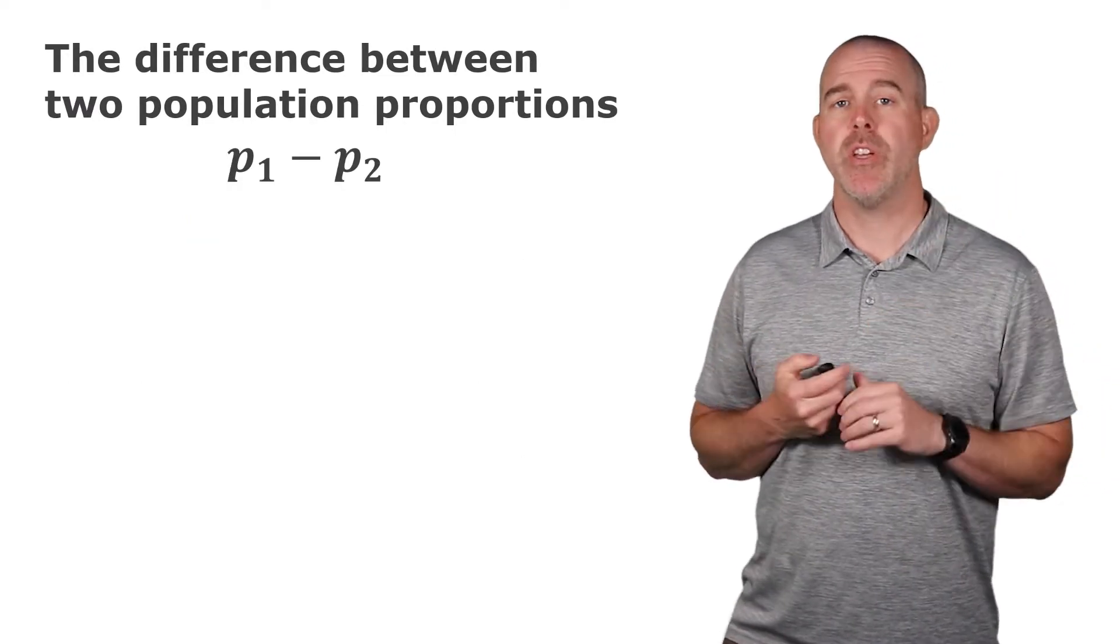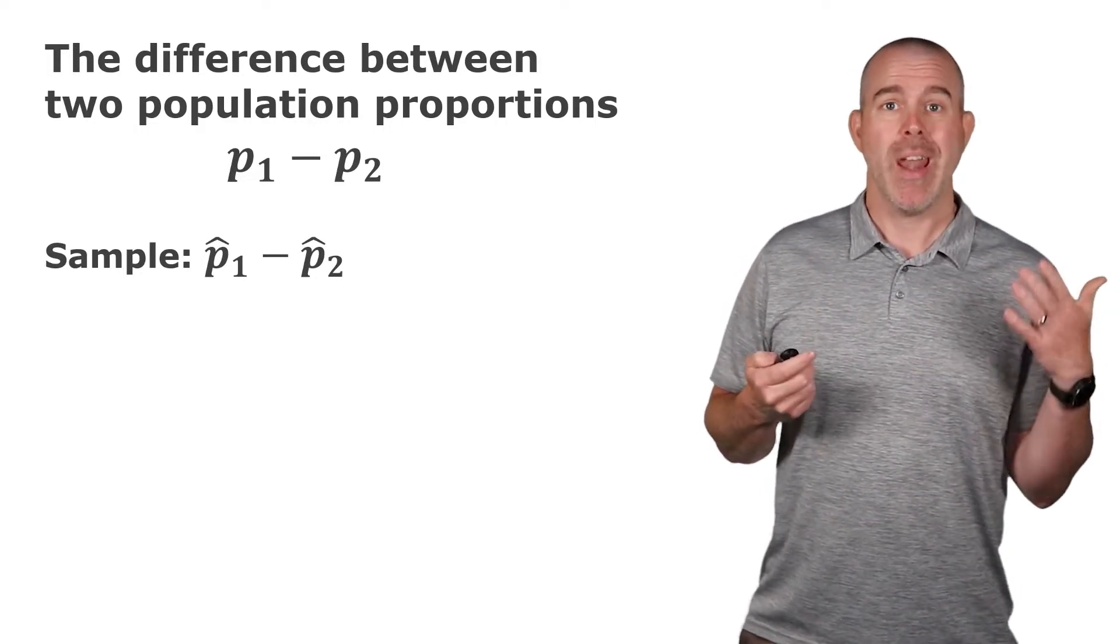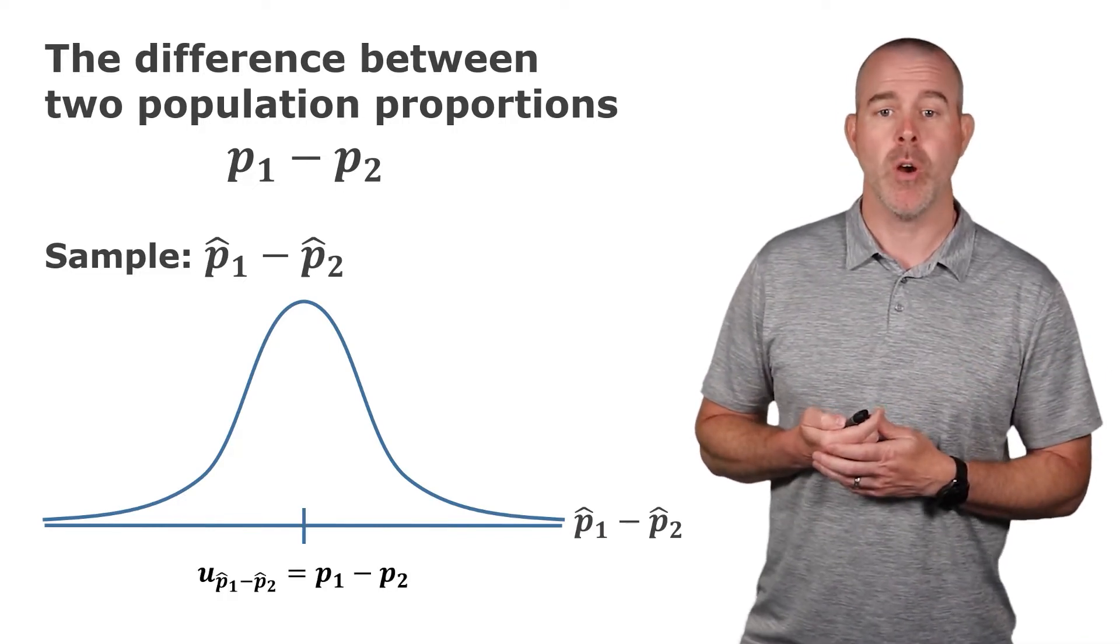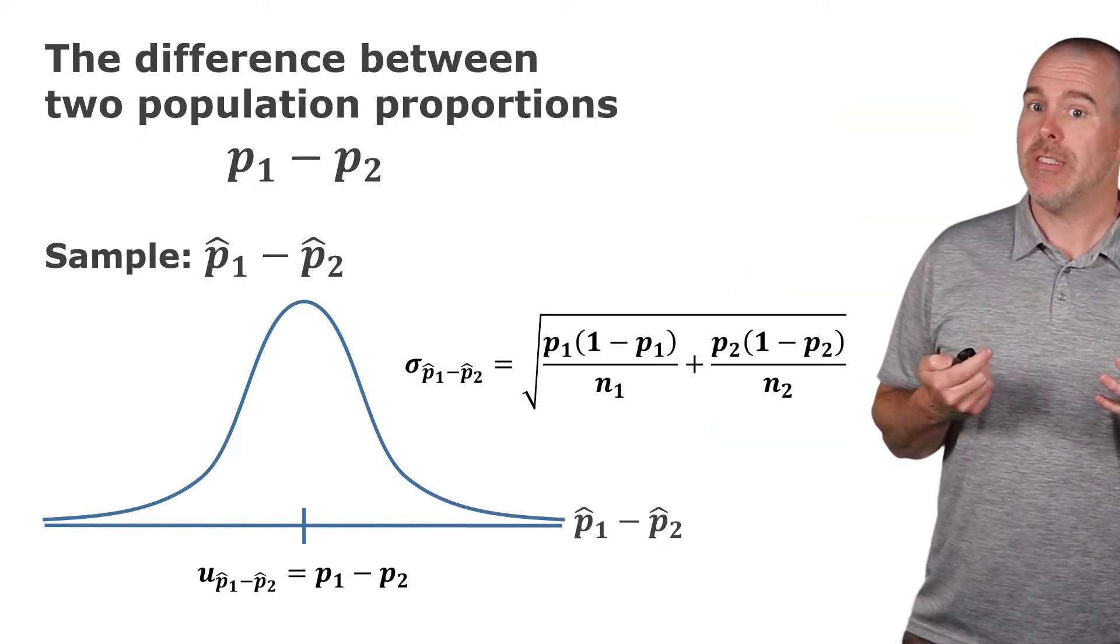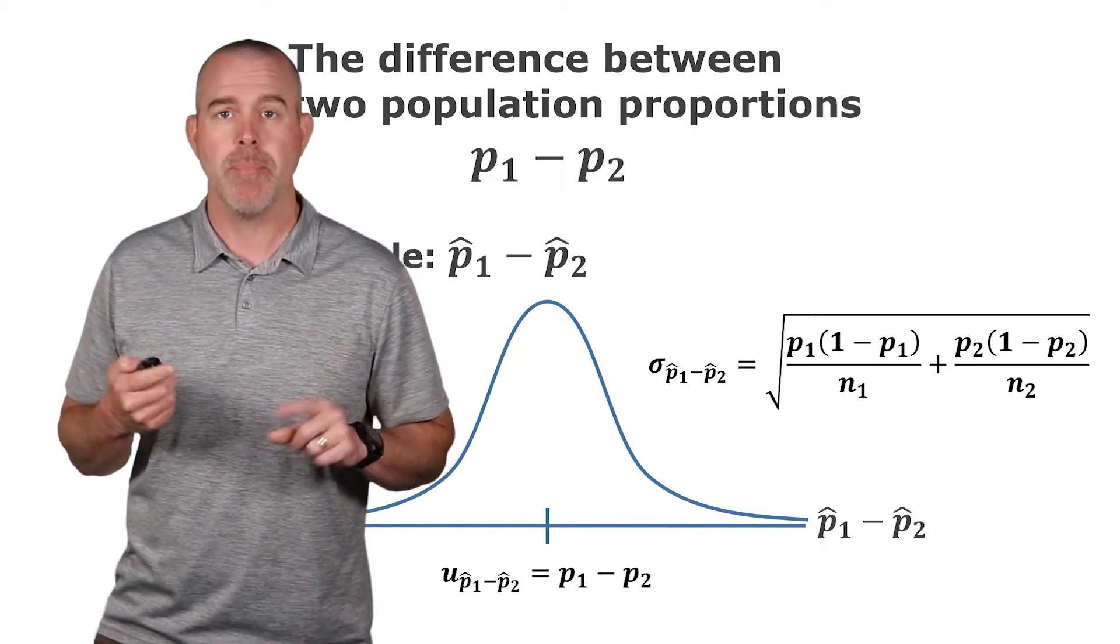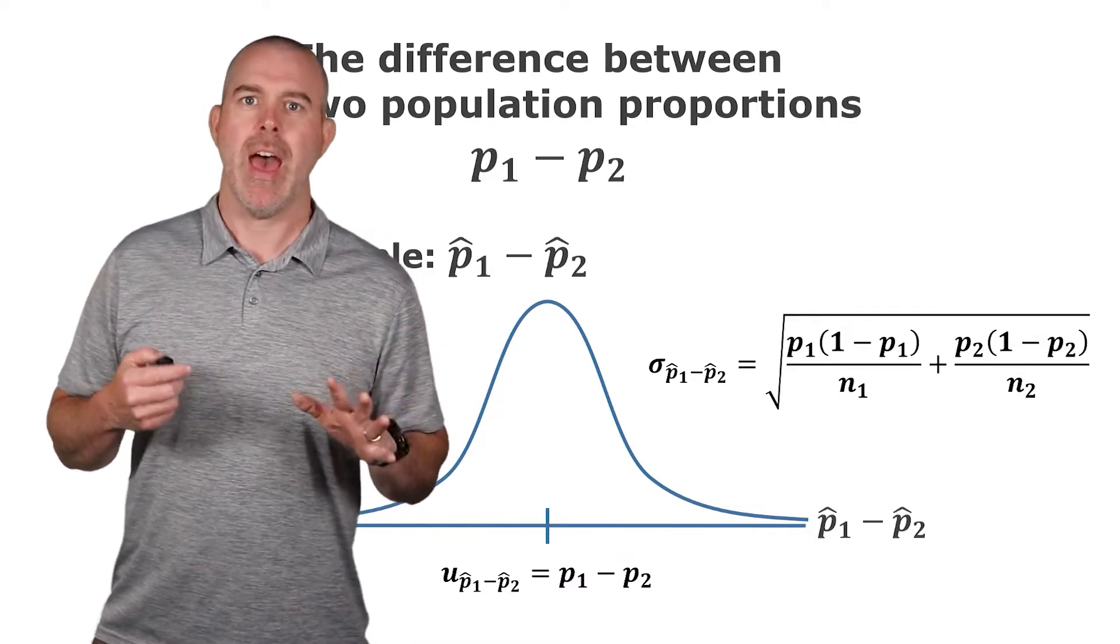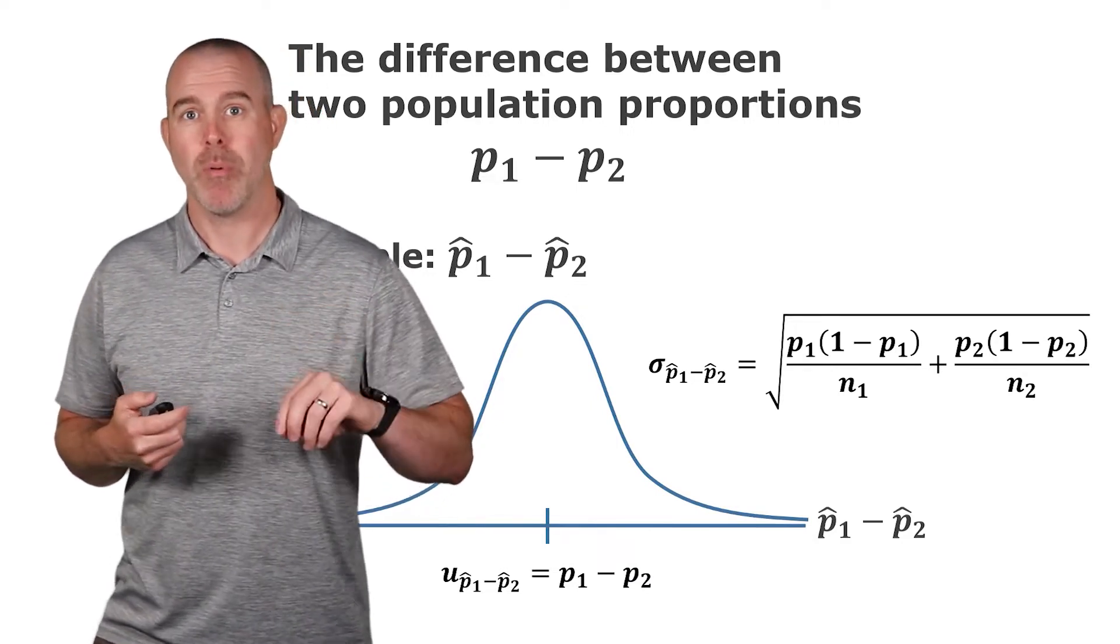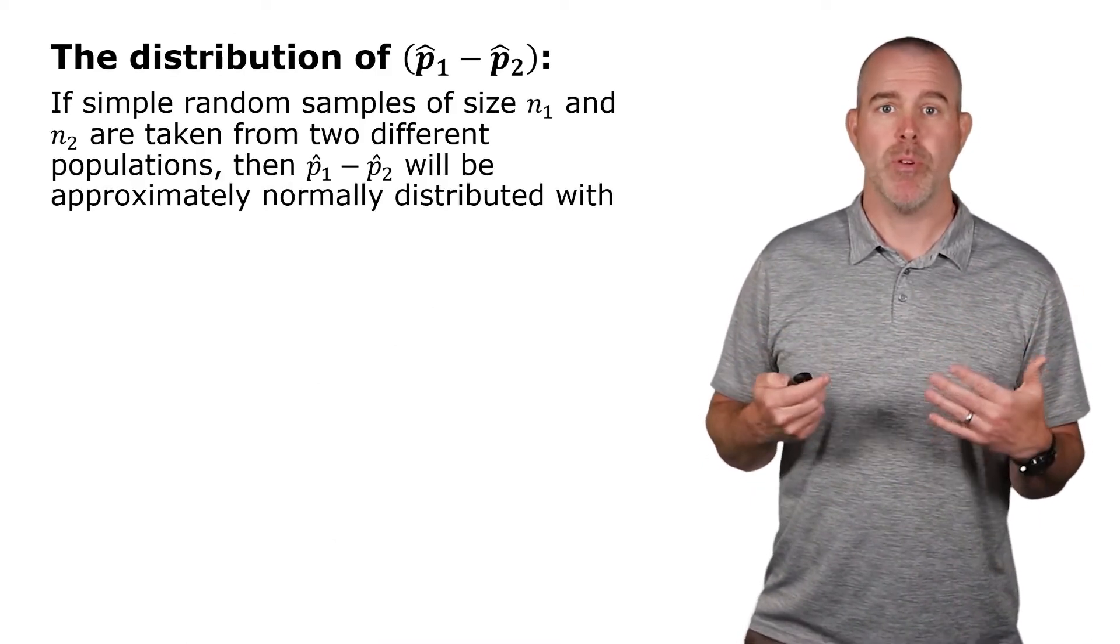So we have the symbols here for the difference between two population proportions, P1 minus P2. The sample would be P1 hat minus P2 hat. And this may shock you, but under certain conditions, the distribution will be approximately normal. The mean, you would expect the mean to be what the population difference is. The standard deviation, it's a little clunky, you might recognize square root of P times one minus P all over N, but here there are two of them. There's some theory behind why they're added together and then the square root. Just trust me that that is the standard deviation of the difference between two sample proportions.